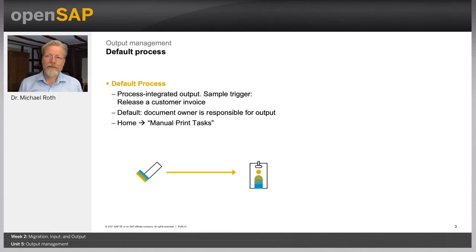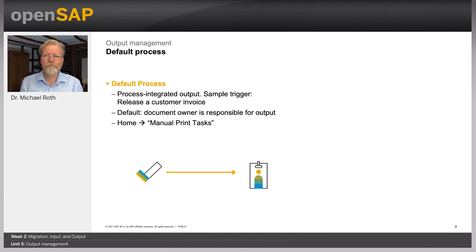Welcome back to the OpenSAP course for key users in SAP Business by Design. My name is Michael Roth, a member of the product management team. Today it is about output management. I'm a customer of the Almeca model company and I received an invoice letter — the interesting question is how data from their by Design system ended up on paper. Many standard processes in by Design at some point trigger an output. When a customer invoice is released, it is put to a queue and someone is made responsible for taking care of that.